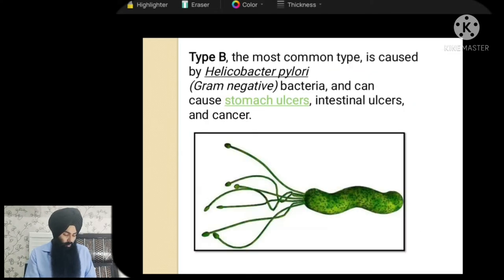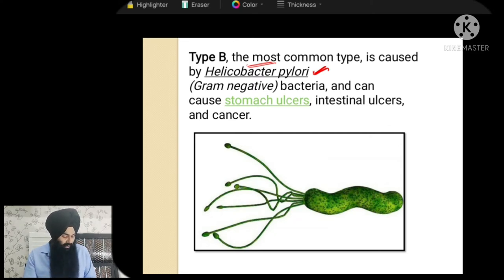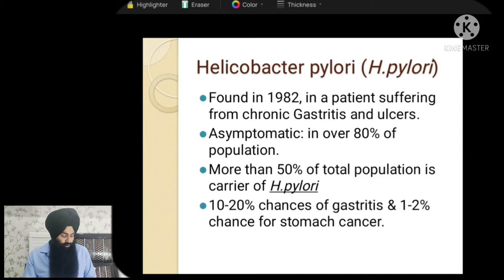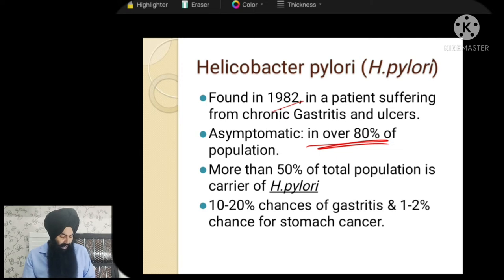The second type is the most common one. This type of gastritis is caused by a gram-negative bacteria called Helicobacter pylori, in short H. pylori. This bacteria is present in the majority of the population, but in a healthy person it usually stays in its dormant state. However, if our stomach acids get weak, we can have issues with overgrowth of H. pylori. It was first found in 1982. In 80% of the population it is asymptomatic, and more than 50% of the population actually carry this H. pylori strain in the gut. In the total population, there is a 10–20% chance of getting gastritis and a 1–2% chance of getting stomach cancer.